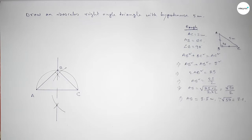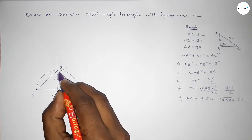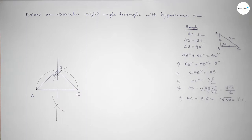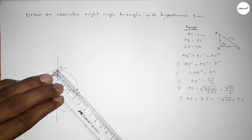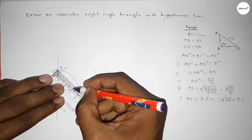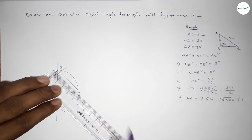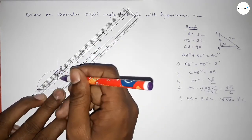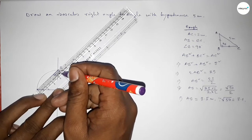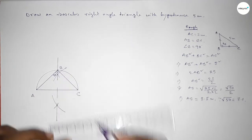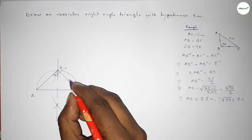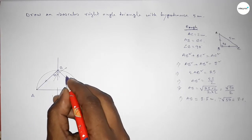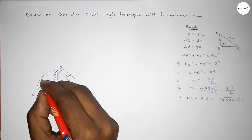We know that the angle in a semicircle is always 90 degrees, so angle B equals 90 degrees. Now checking whether sides BC and AB are equal — placing the scale and measuring: BC is approximately 3.5 centimeters and AB is also approximately 3.5 centimeters.